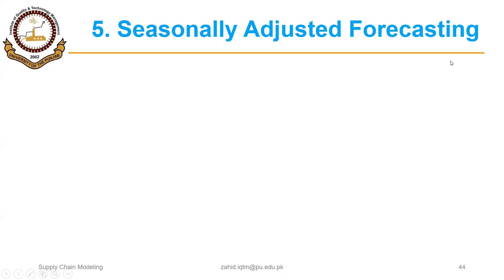In the previous segment we discussed linear trend line, and we saw that if there is an obvious trend in the data then we can use that method to forecast the demand. When we discussed trend-adjusted exponential smoothing, we made a baseline forecast using simple exponential smoothing and then added the trend factor to make the adjusted forecast. Now if there is seasonality in the data, then we have a different method called seasonally adjusted forecasting.